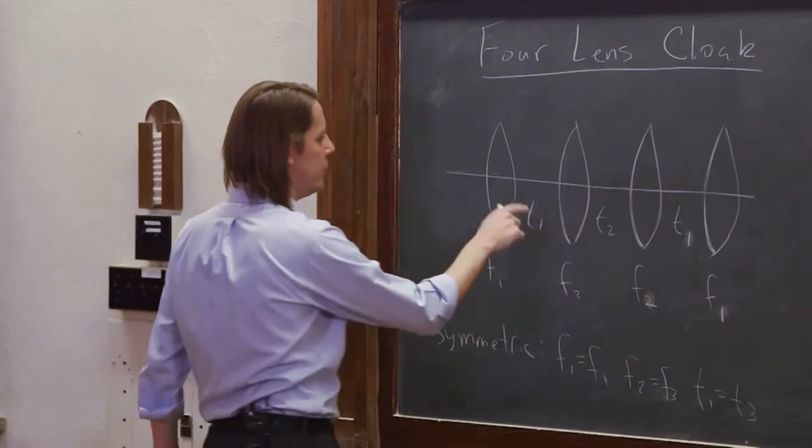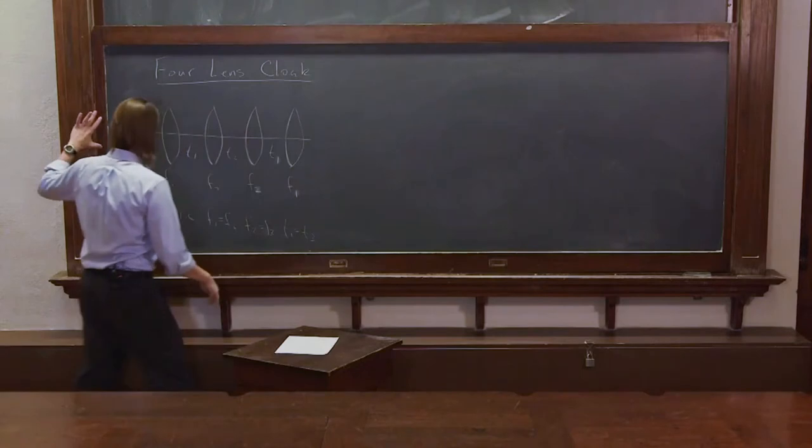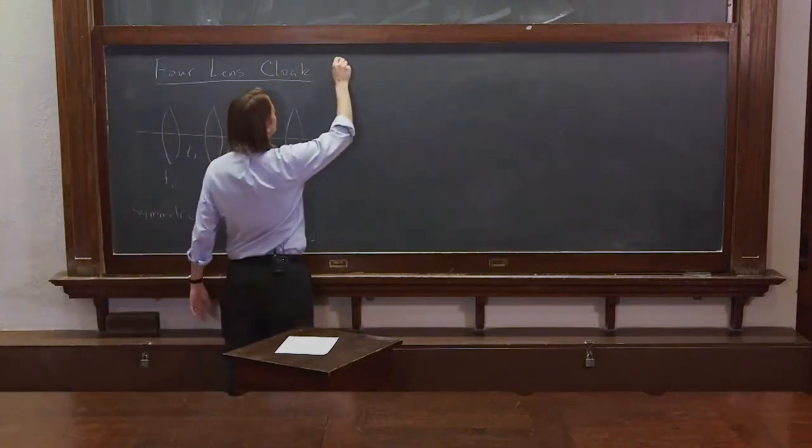So we've got one, two, three, four, five, six, we've got seven matrices here. So let's get started. The light is going to come in this way, but I'm going to write the matrices backwards because I like to write from left to right. So here we go.